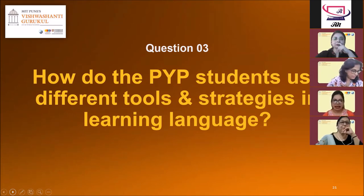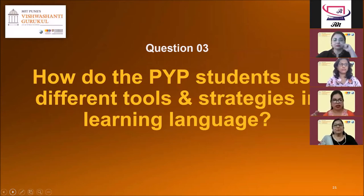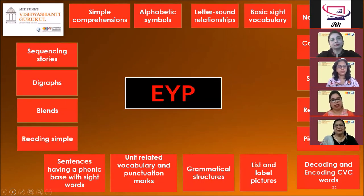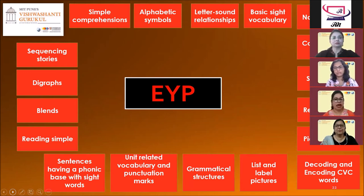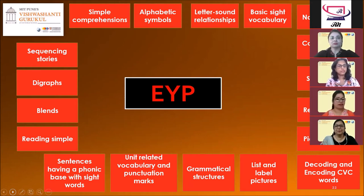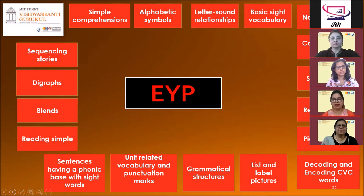Before initiating any strategy, a sample model is presented, explained, with a criteria chart, and then the student is guided accordingly. In early years, children are provided with opportunities to learn alphabetic symbols, letter-sound relationships, basic sight vocabulary, comprehension strategies, and the reading of stories designed for young children. They learn naming objects, singing songs, reciting poems, picture readings, simple comprehensions, and sequencing stories, as you can see in the slide.